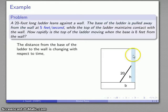The information given tells us that the length of the base is changing at some rate, 5 feet per second. And so that's a rate of change with respect to time. So I know that the derivative db/dt is equal to 5.